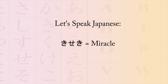The next word is kiseki, which uses the letters ki, se, and ki. Once again: kiseki, or faster: kiseki. The meaning is miracle. For example, kiseki ga okotta, or kiseki ga okotta, means a miracle has happened. Once again: kiseki ga okotta. The word is ki-se-ki, or faster: kiseki.